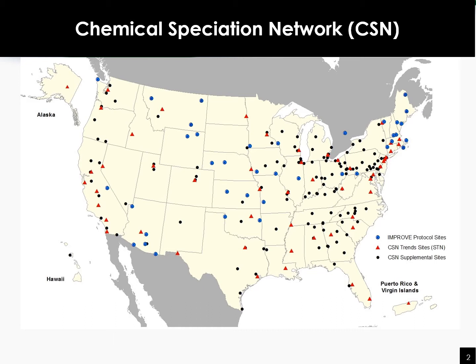One group of monitors measures particulate matter, or PM. PM is the term used for a mixture of solid particles and liquid droplets found in the air. Some particles, such as dust, dirt, soot, or smoke, are large or dark enough to be seen with the naked eye. Others are so small that they can only be detected using a specialized microscope.